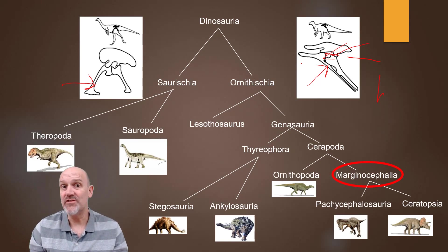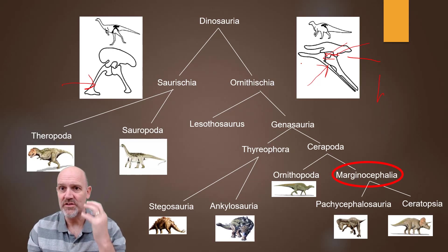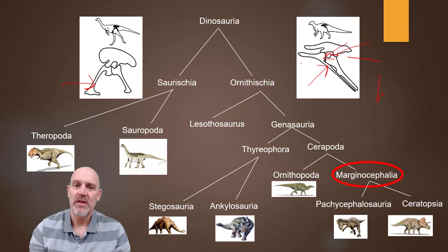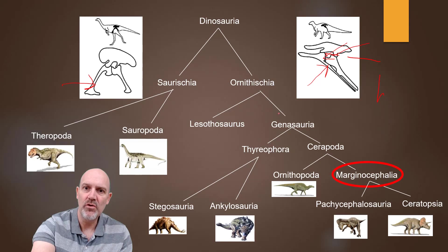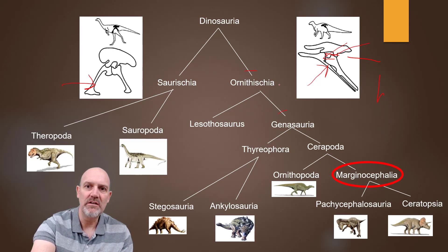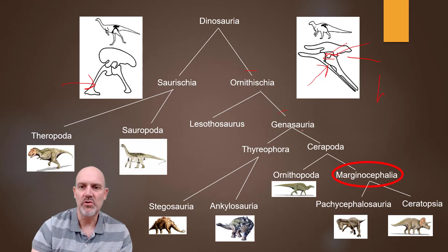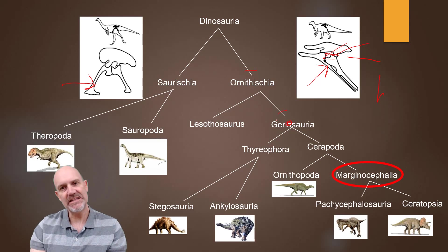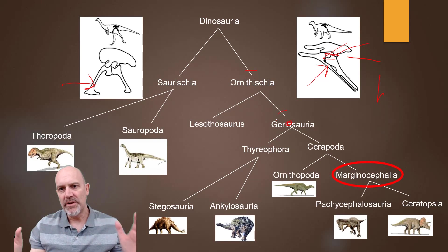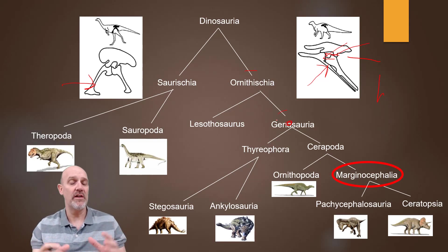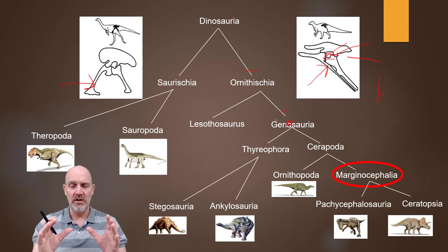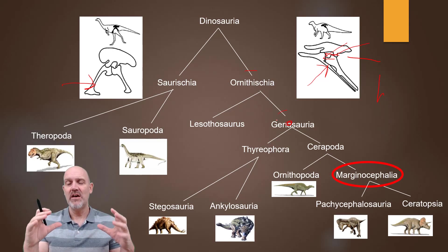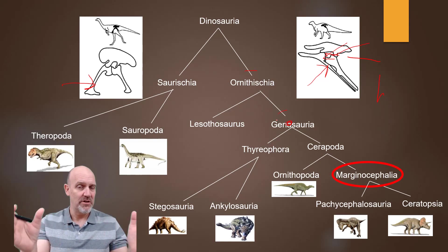The synapomorphy for Genasauria was cheek muscles — Genasauria means 'cheek lizard.' Synapomorphies always go just before the node as a hash mark on the cladogram. So you'd write 'posteriorly pointing pubis bone' for Ornithischia, and 'cheek muscles' for Genasauria. When we click on Genasauria, we open it up and get two groups: Thyreophora and Cerapoda — both very large taxonomic groups.